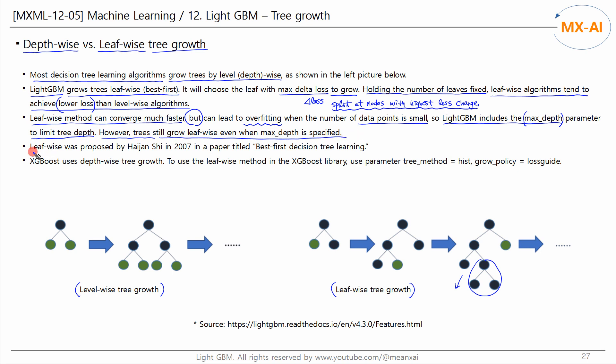Leaf-wise was proposed by Hai-Jun Shi in 2007 in a paper titled Best First Decision Tree Learning. XGBoost uses the depth-wise tree growth by default. To use the leaf-wise approach in the XGBoost library, set the tree method and growth policy parameters as follows.